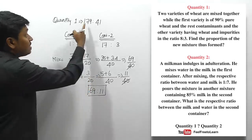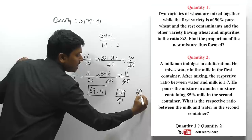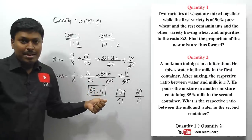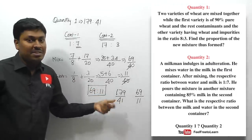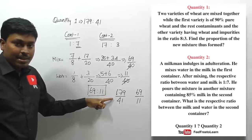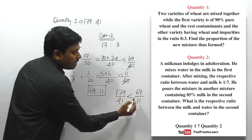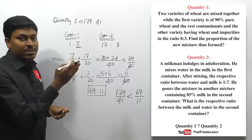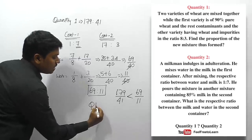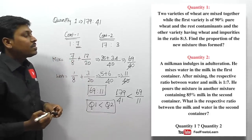So the answer for question one is: quantity one is less than quantity two. This question is based on allegation and mixture.